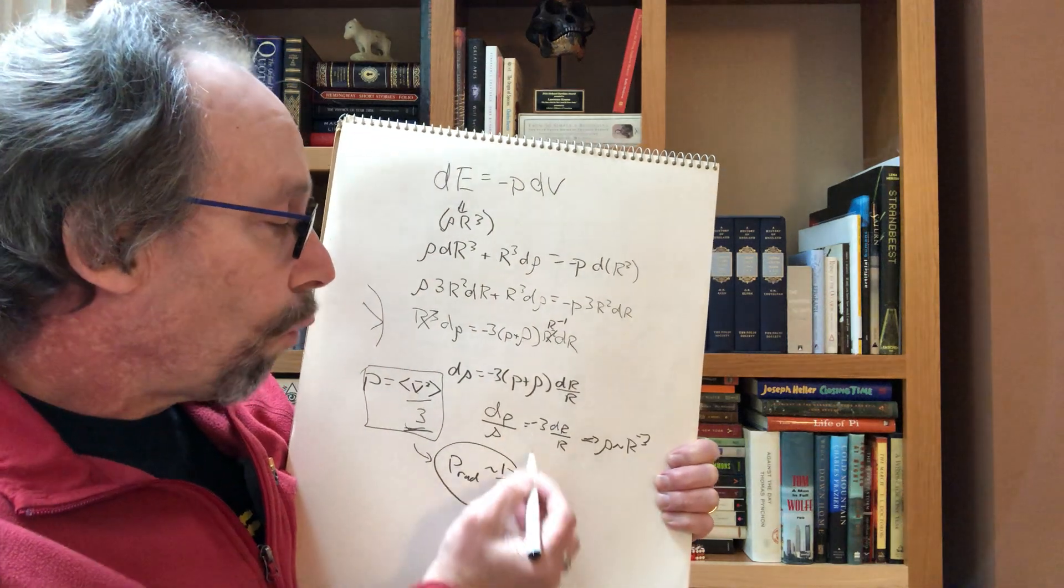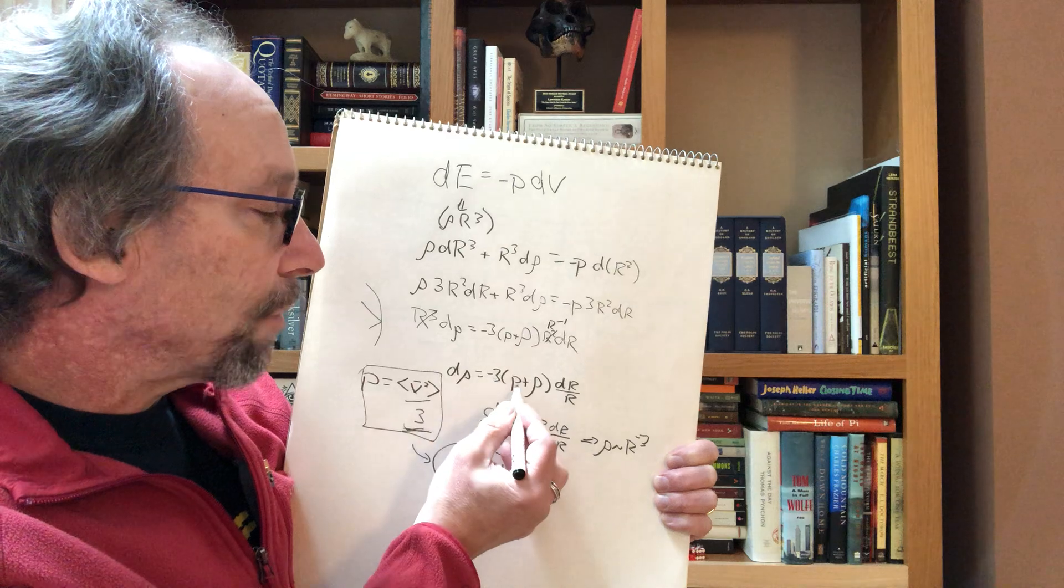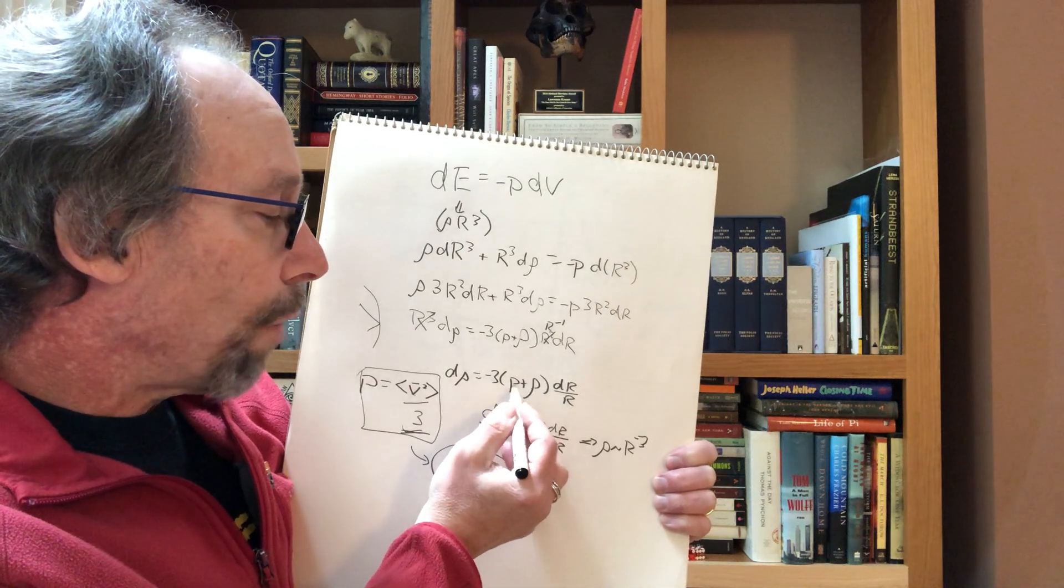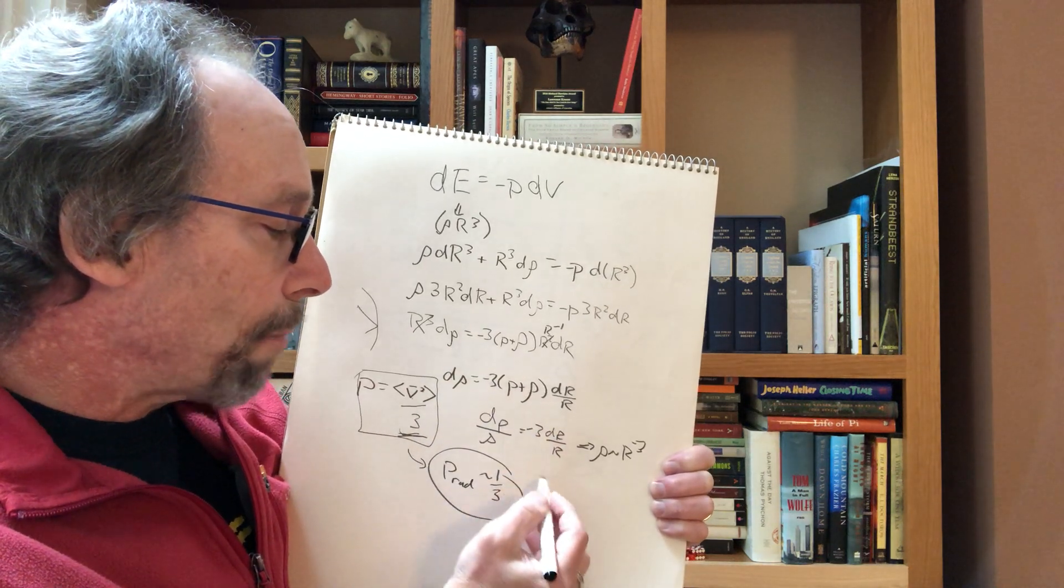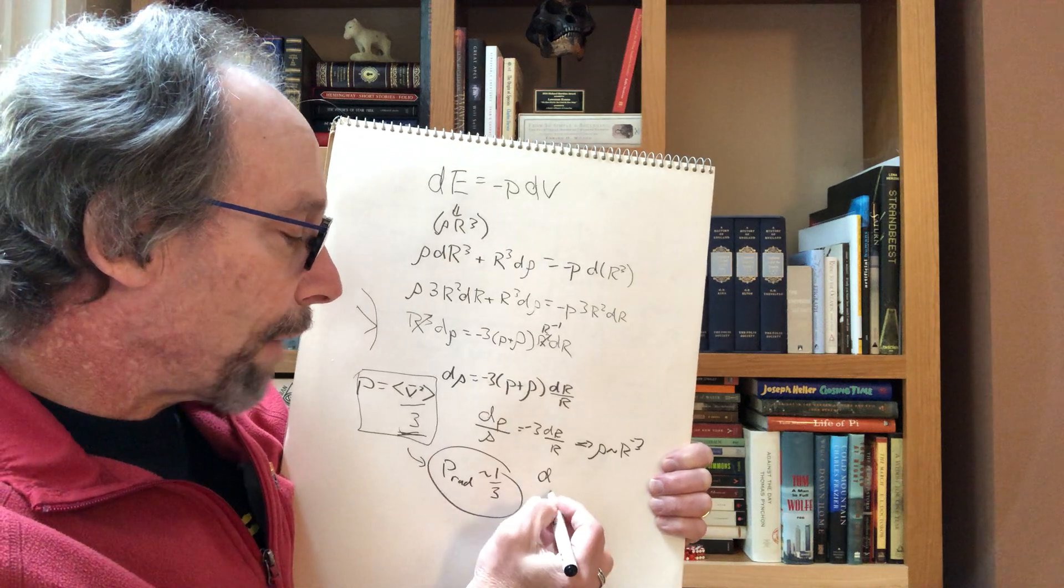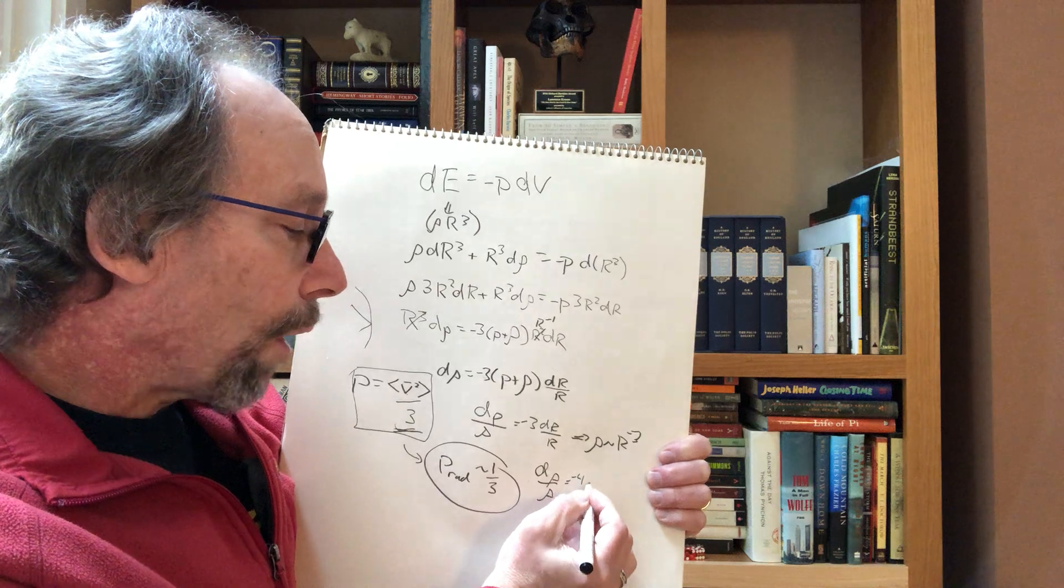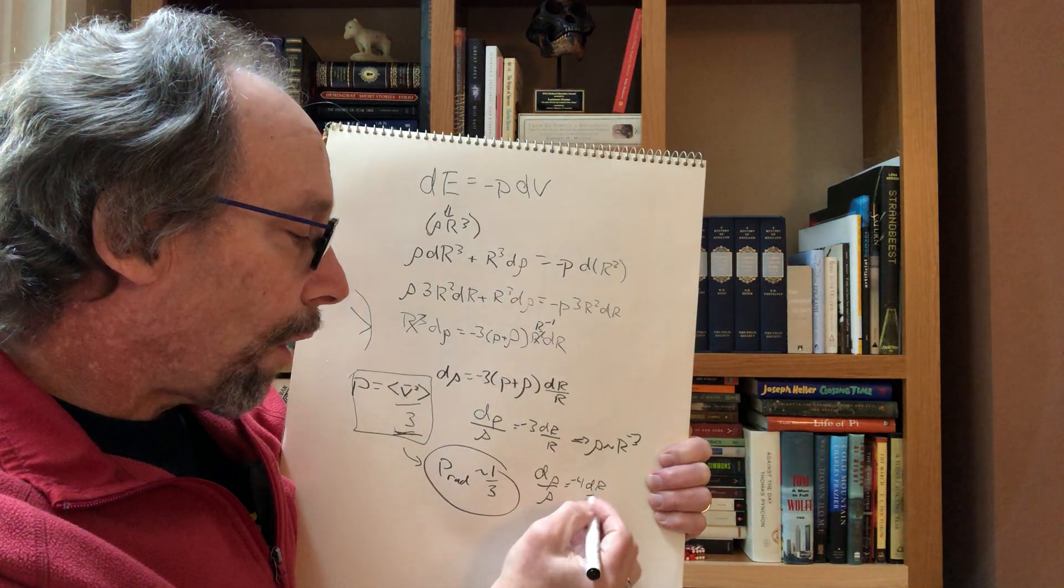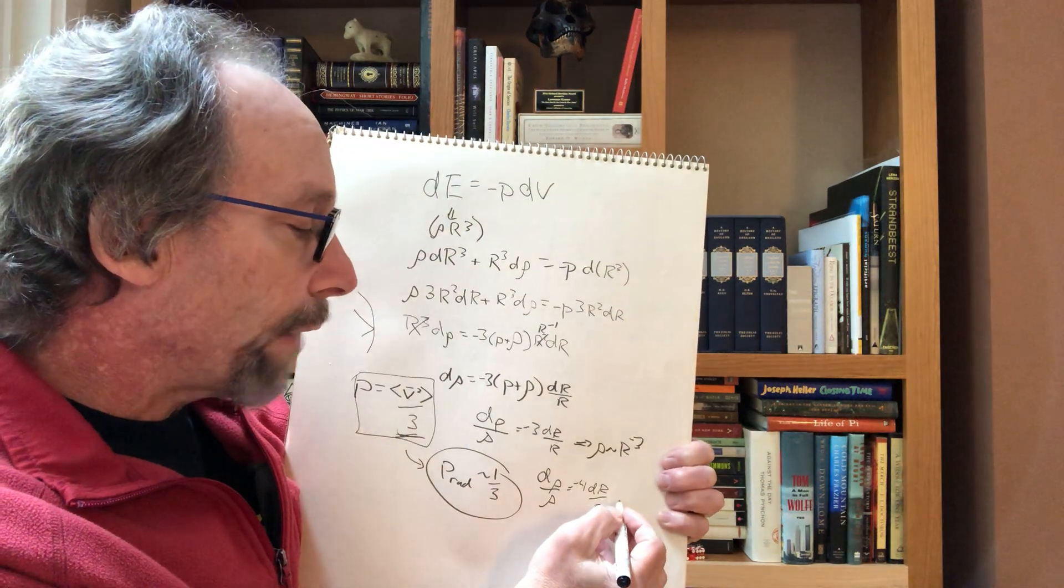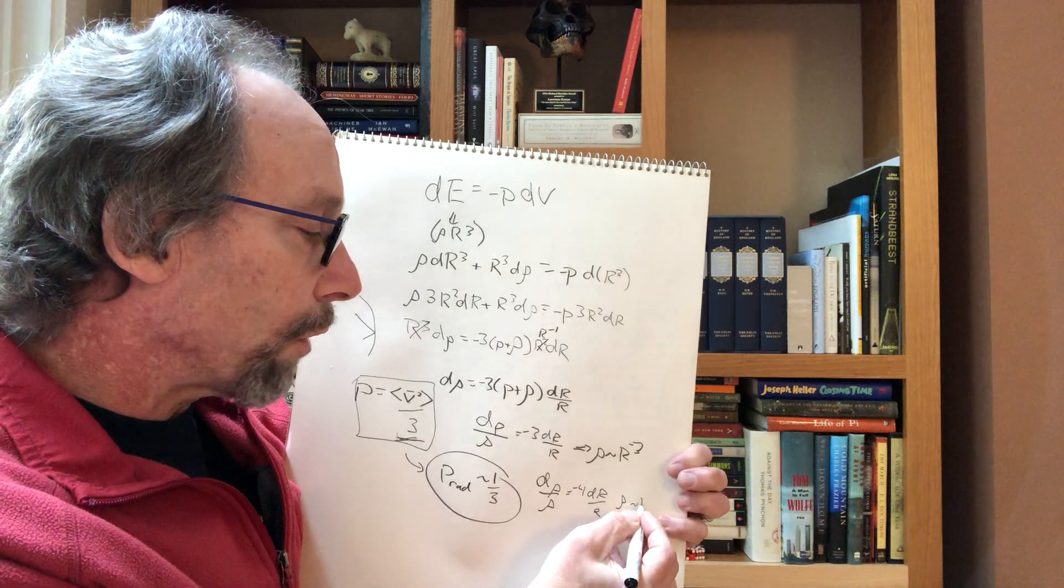And if you plug in one-third here, you get minus 3 times one plus one-third, which turns out to be minus four-thirds, and you end up getting d rho over rho is equal to minus 4 dr over r, and, lo and behold, that means that rho goes as r to the minus 4.